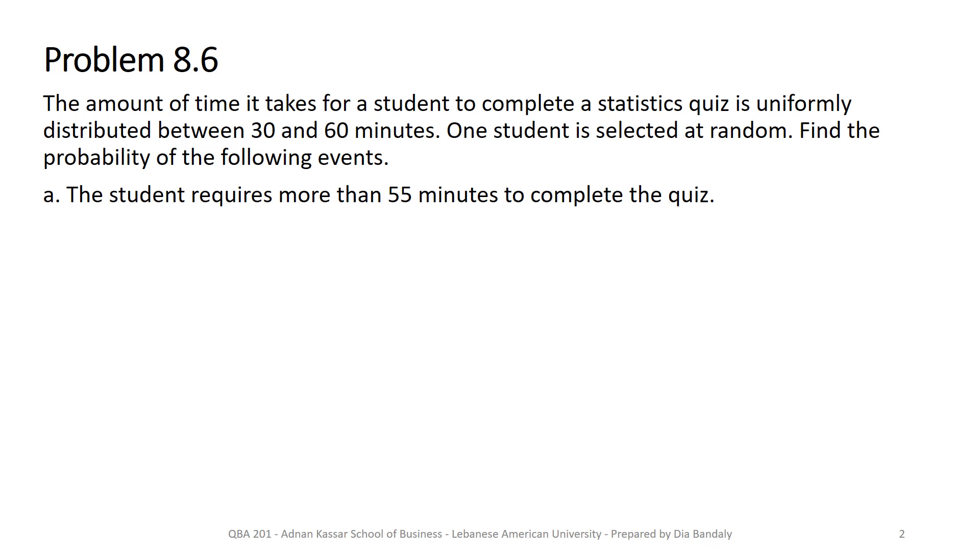So let's start with that. Here we are given that a time for a student to complete a quiz is uniformly distributed. Okay and you know that for a uniform distribution we have two parameters. These two parameters are the minimum of course that this time can take which is 30 and the maximum which is 60. So we need to find the probabilities of different events and we start with the simple one. The student requires more than 55 minutes to complete the quiz.